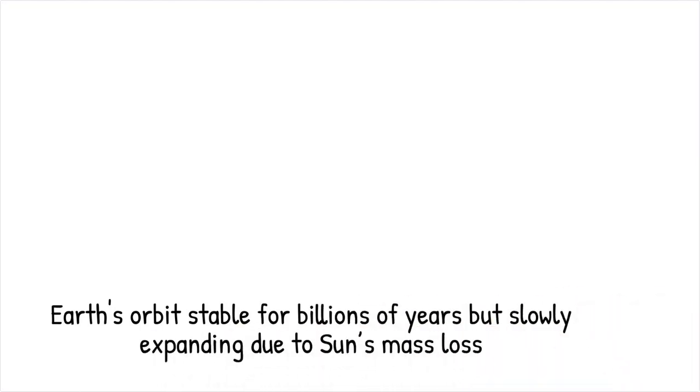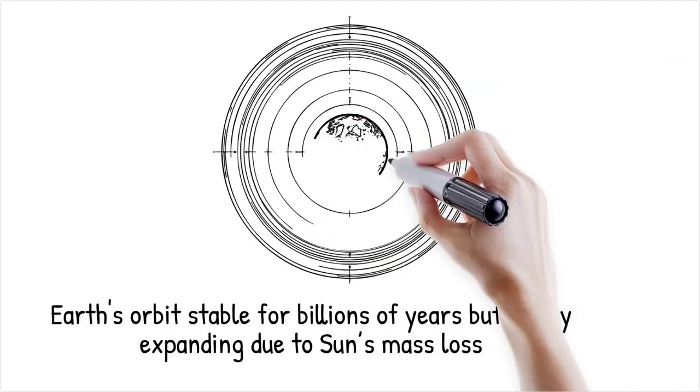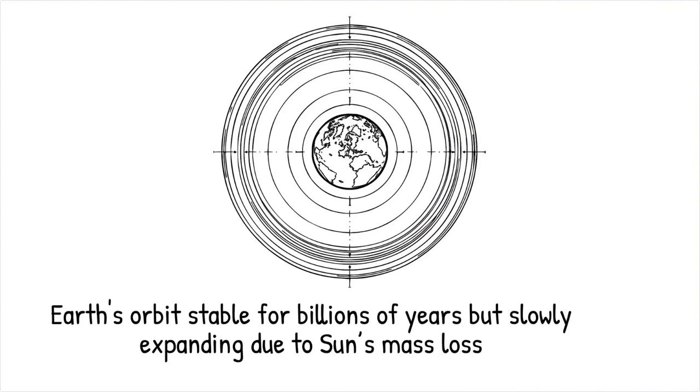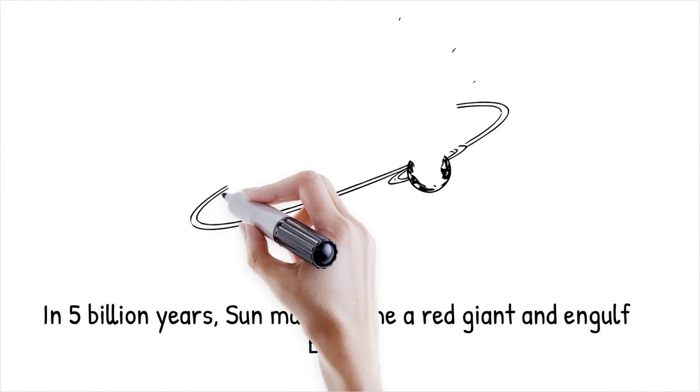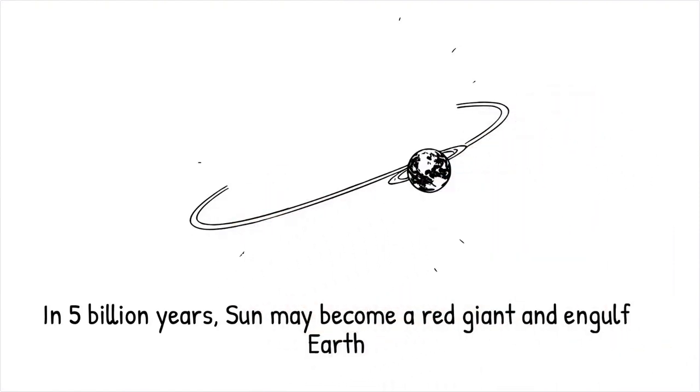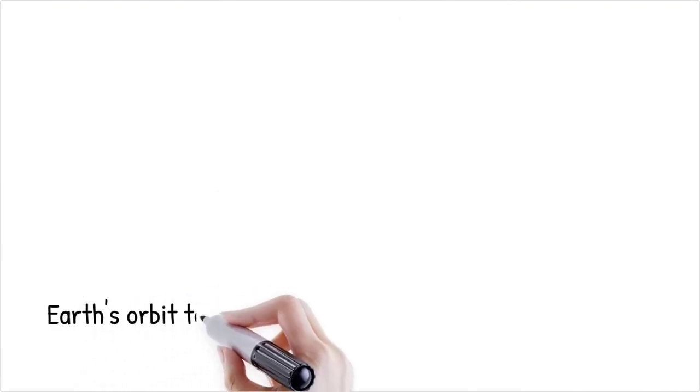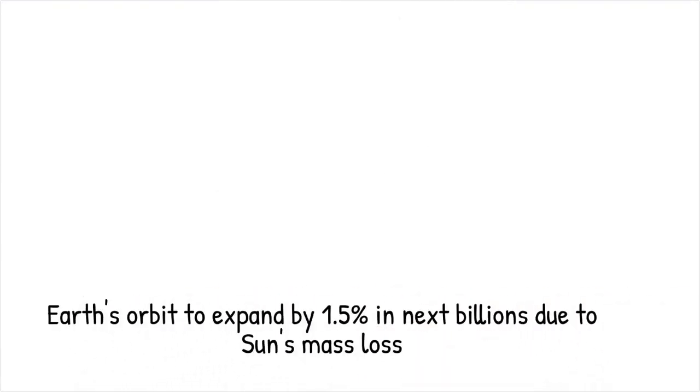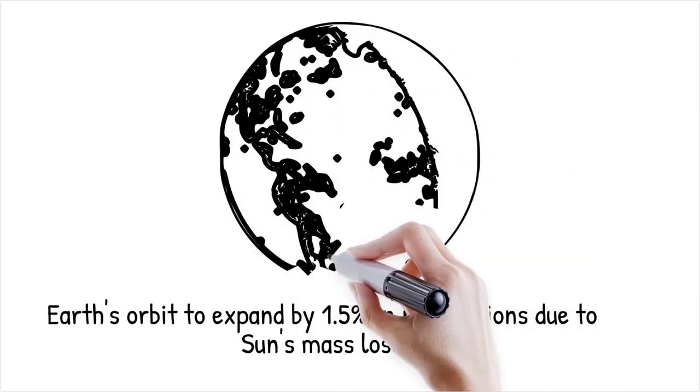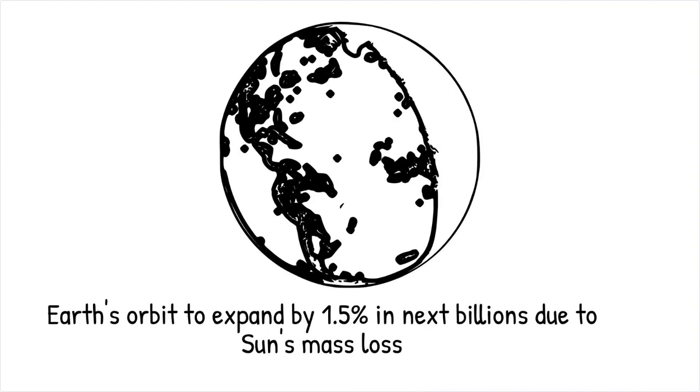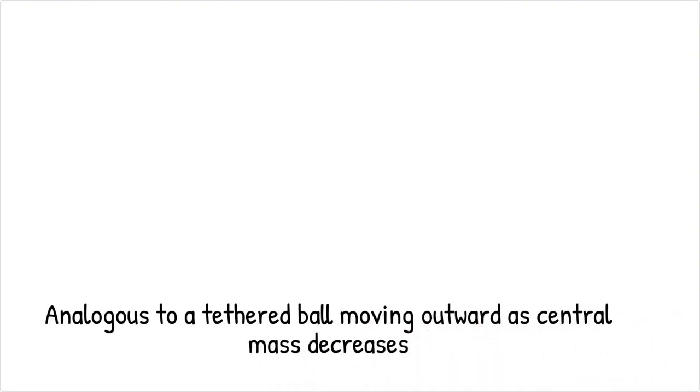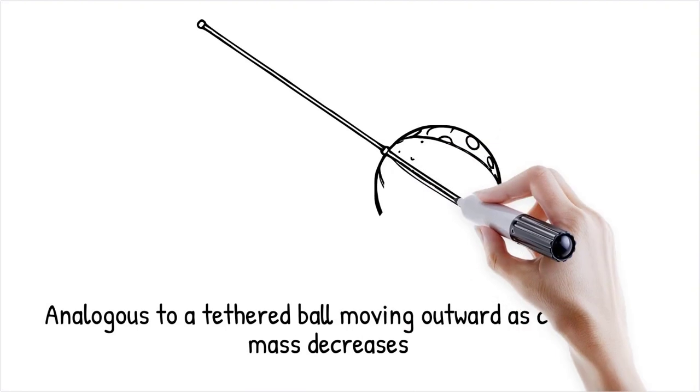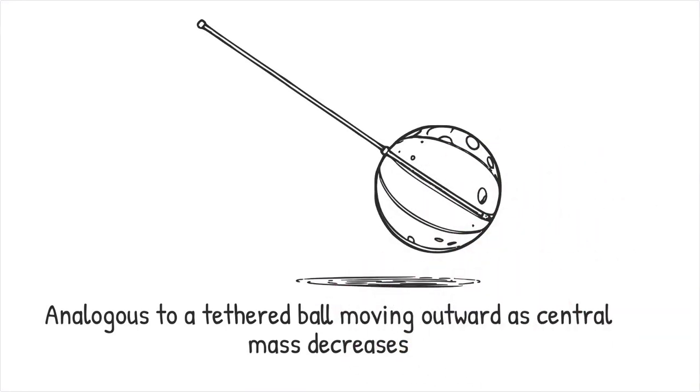Simulations of the solar system's future suggest that Earth's orbit will remain stable for at least the next hundreds of millions to billions of years. However, due to the Sun's gradual loss of mass as it burns fuel, Earth's orbit is slowly expanding. The Sun will eventually become a red giant in about 5 billion years, increasing in size and potentially engulfing the inner planets, including Earth. Studies estimate that Earth's orbit will expand by about 1.5 percent over the next few billion years due to the Sun losing mass through solar wind and nuclear fusion processes. This is like a tethered ball slowly moving outward as the central mass holding the tether decreases in weight. Eventually, the force maintaining the orbit weakens and the ball drifts away.